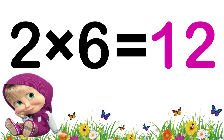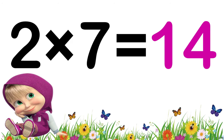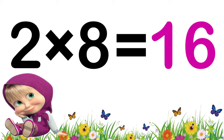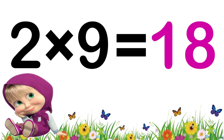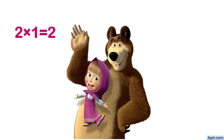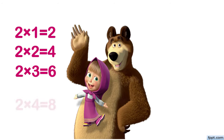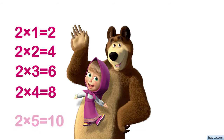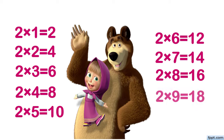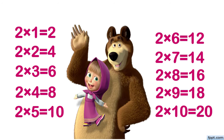Two sevens are fourteen. Two eights are sixteen. Two nines are eighteen. Two tens are twenty. Two ones are two, two twos are four, two threes are six, two fours are eight, two fives are ten, two sixes are twelve, two sevens are fourteen, two eights are sixteen, two nines are eighteen, two tens are twenty.